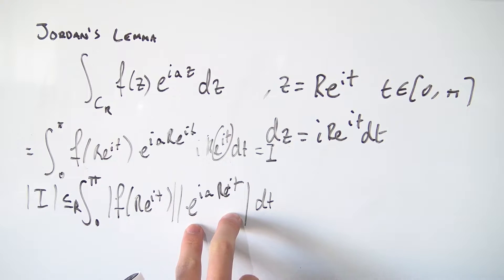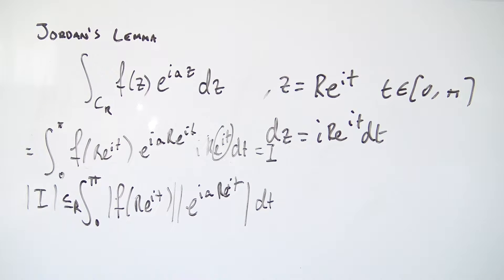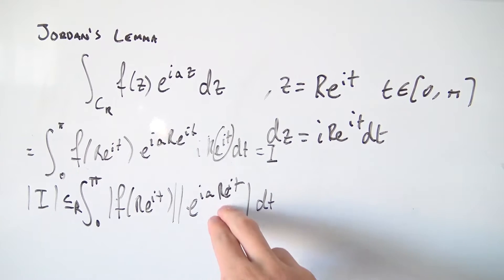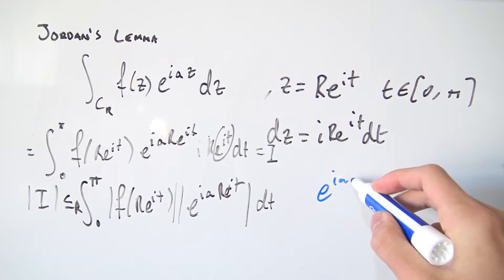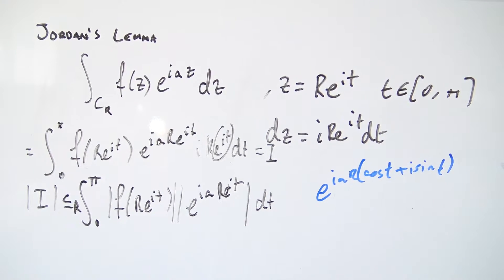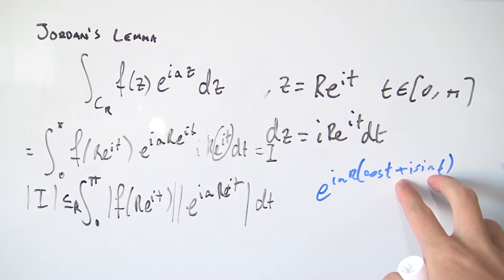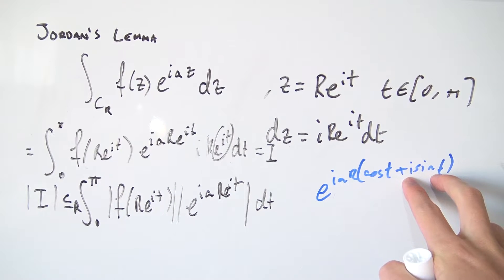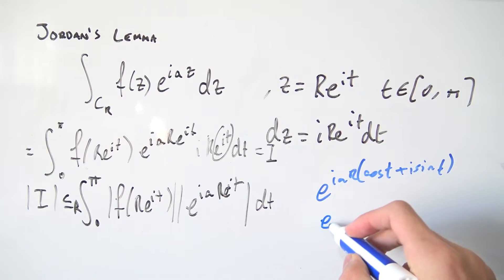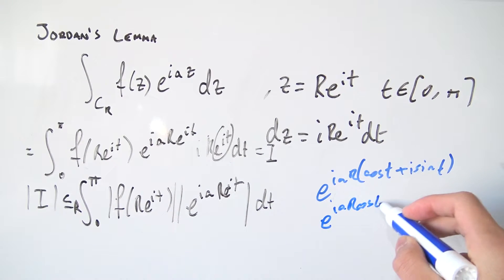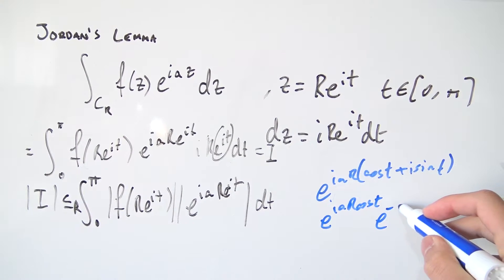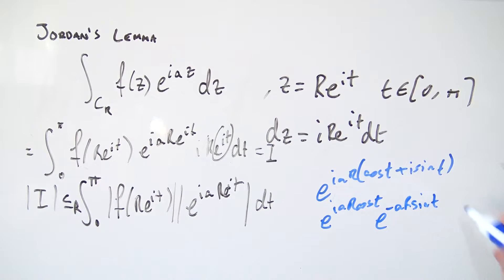We can simplify the exponential term. Using Euler's formula, e^(it) expands to cos(t) + i·sin(t), so e^(iare^(it)) becomes e^(iar(cos t + i sin t)). Distributing and splitting the exponent into a product, we get e^(iar cos t) times e^(−ar sin t). We're still taking the absolute value of all of that.